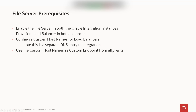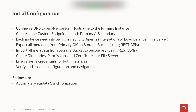Clients only need to know the custom hostnames of the custom endpoint for Integration Cloud as well as for the file server. For initial configuration: configure DNS to resolve the customer hostname to the primary instance, create the same custom endpoint in both primary and secondary. If you have connectivity agents, both instances must deploy those agents since they are bound to one instance. Configure connectivity agents for both instances at the needed endpoints, along with the load balancer for the file server. Then export all metadata from the primary OIC instance to the storage bucket using REST APIs.